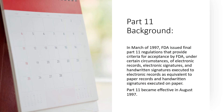Now let's understand the Part 11 background — when Part 11 came into the picture. In March of 1997, FDA issued the final Part 11 regulation that provides criteria for acceptance by FDA of electronic records, electronic signatures, and handwritten signatures executed to electronic records as equivalent to paper records and handwritten signatures executed on paper. Part 11 became effective in August 1997.